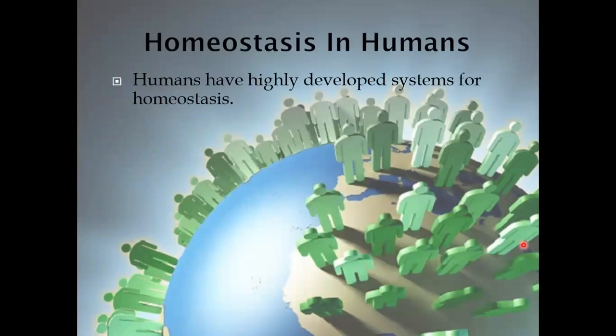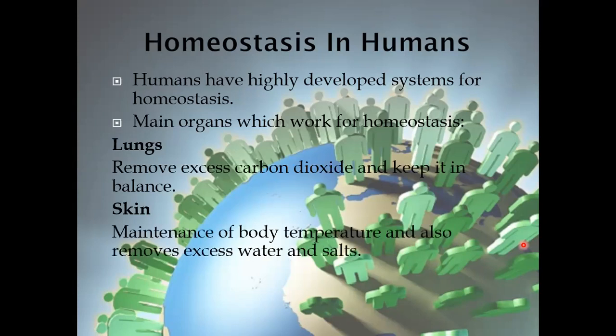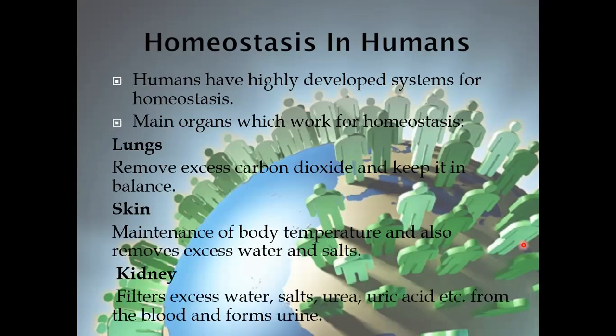Homeostasis in humans. Humans have a well-developed system for homeostasis. The major organs which work for homeostasis are the lungs, skin, and kidneys. Lungs remove excess carbon dioxide and keep it in balance. The skin maintains body temperature and removes excess water and salts. The kidneys filter excess water, salts, urea, and uric acid from the blood, and are also involved in the formation of urine.